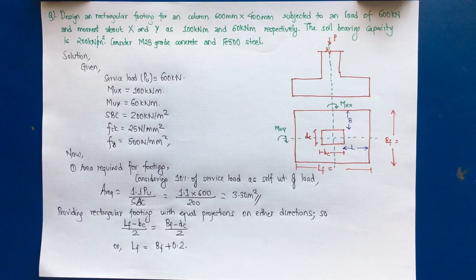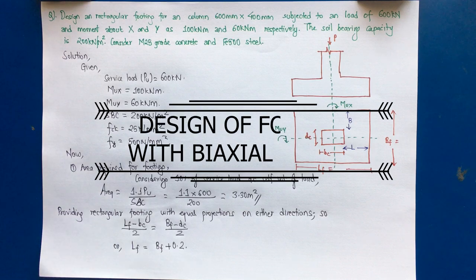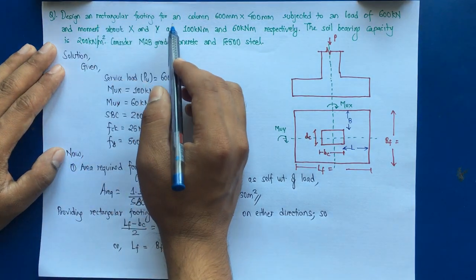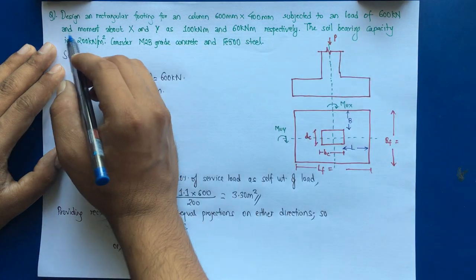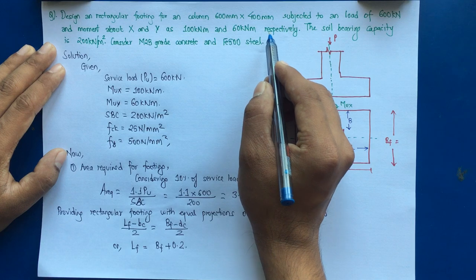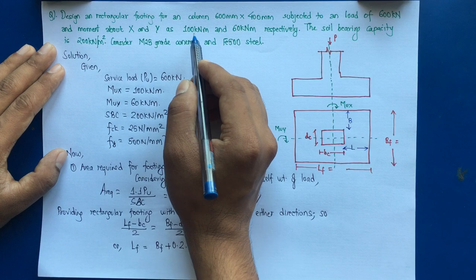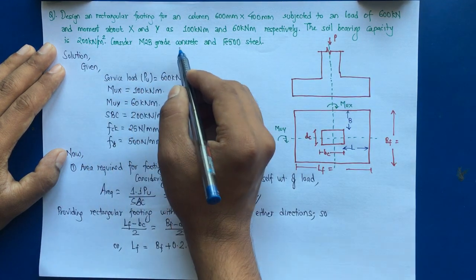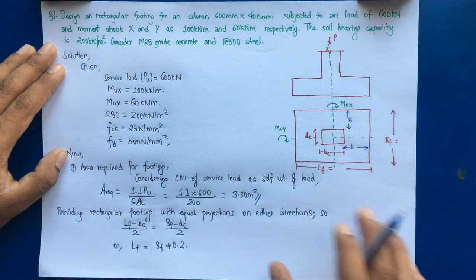Hello, and welcome back to the channel Civil Construction and Tutor. In this video, I will show you how to design a footing subjected to an axial load and biaxial moment. We need to design a rectangular footing for a column 600 mm by 400 mm, subjected to an axial load of 600 kN, moment about X of 100 kN·m, and moment about Y of 60 kN·m. The soil bearing capacity is 200 kN/m², using M25 grade concrete and Fe 500 steel.